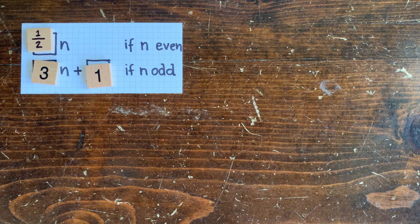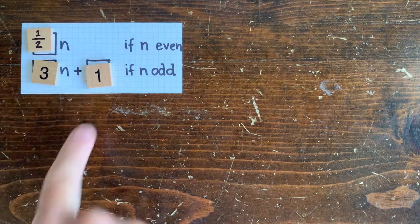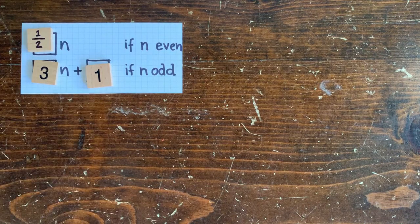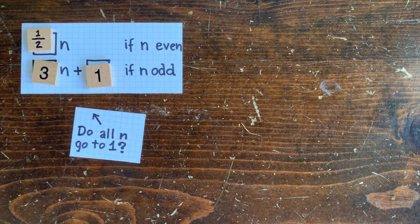Greetings. Welcome back. The 3n plus 1 problem says start with any number. If it's even, cut it in half. If it's odd, multiply by 3 and add 1.